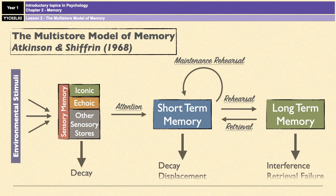Forgetting and memory loss can occur at every step of the way. In sensory memory, you have decay, where information that isn't paid attention to simply fades into nothingness. In short-term memory, you have decay but also displacement, which means that new memories push old memories out because there's only a limited capacity. In long-term memory, memories can get lost via interference or retrieval failure — both theories you'll come across later in the memory topic.